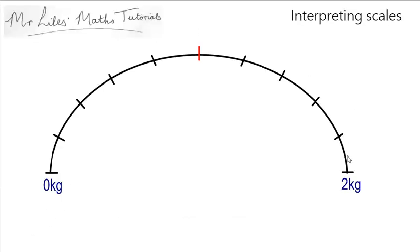Here is a set of weighing scales with zero kilograms on the left over to two kilograms on the right. And if you imagine putting weights on, it would go over and as things get heavier over to the two kilograms here.